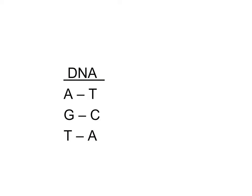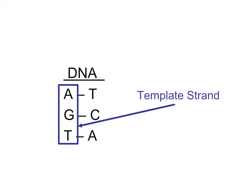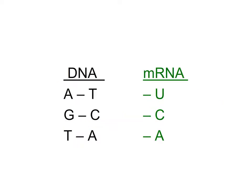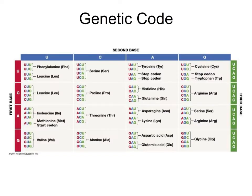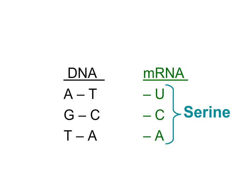Let's say we have a DNA molecule — we can only see three base pairs. One of these strands will serve as the template strand used to make messenger RNA. So what RNA nucleotides would RNA polymerase add to pair up with this sequence? The answer is U, C, A. Since we have three nucleotides, this is a codon. Looking at the table, this codon corresponds to serine.